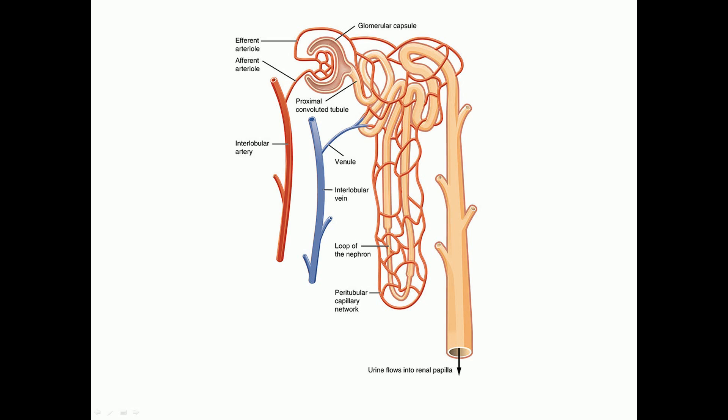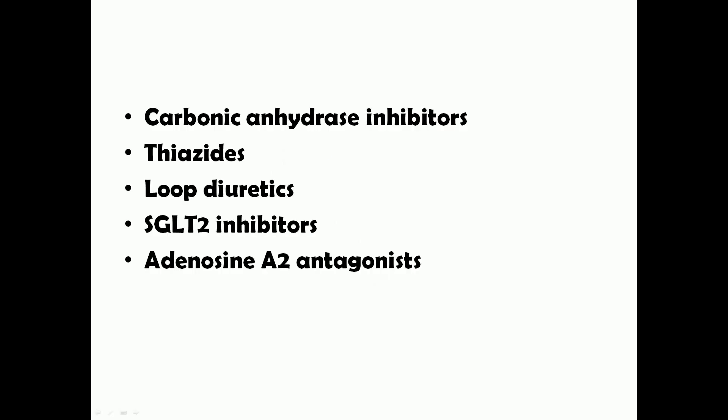You need to know the various parts of the nephron in order to understand the mechanisms of action and side effects of diuretics. The most important diuretics we need to know are carbonic anhydrase inhibitors, thiazides, loop diuretics, SGLT2 inhibitors, and adenosine A1 antagonists.